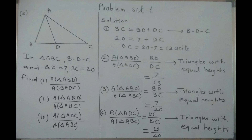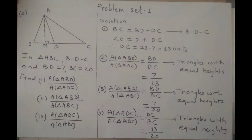So first I will draw altitude AM, which is the common height of all triangles. Now let us start the solution. We have BC is equal to BD plus DC — that is the segment addition property — so substituting the value of BC: 20 is equal to 7 plus DC. So you will get DC is equal to 13 units.